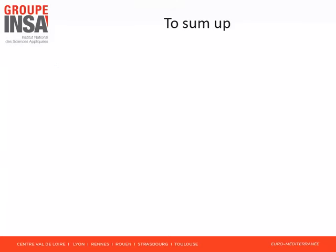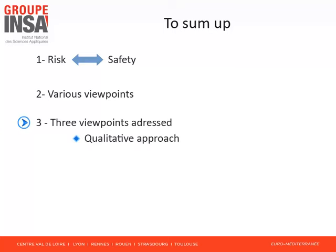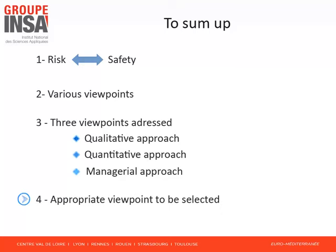Let me summarize this first lesson with four key points. Firstly, risk and safety are related concepts. Safety management is a specialization of risk management where the objective is the preservation of health and environment. Secondly, definitions of risk and safety depend on subjective viewpoints. Thirdly, the course will address three viewpoints leading to three different approaches: the qualitative or deterministic approach, the quantitative or probabilistic approach, and finally the managerial approach. A given viewpoint is often decreed, for instance by regulation. Otherwise, you will be able to make a choice between qualitative, quantitative and managerial viewpoints. Note that techniques, models, and processes appropriate for one viewpoint will not be suitable for an alternative viewpoint. An inappropriate viewpoint will lead to inadequate risk management activities and, in the end, to the non-achievement of expected objectives.